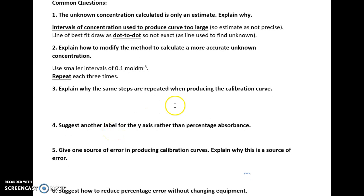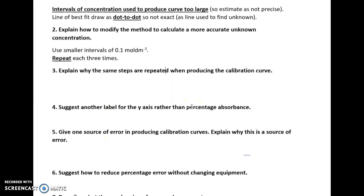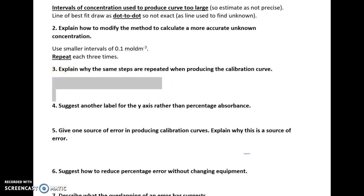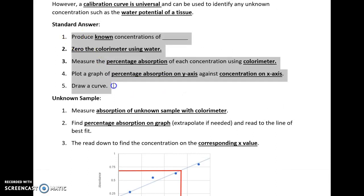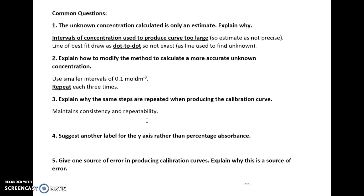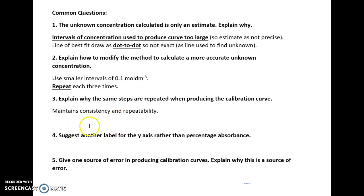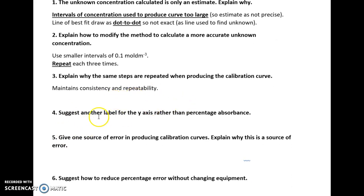Explain why the steps are repeated when producing the calibration curve. So this is to maintain consistency and reliability. So what I mean by that is, why are these steps repeated? Why are they the same sort of order of sequence? That improves consistency and repeatability, not reliability.